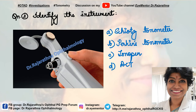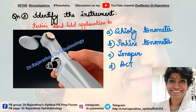Second question: identify the instrument. The moment you see this, most of us know that it is the Perkins handheld applanation tonometer. Schiotz tonometer most of you must have seen in your OPDs. Tono-pen is just like a small pen. DCT dynamic contour tonometer is an attachment to the slit lamp and gives you a digital reading. This is the Perkins handheld tonometer — the tonometer of choice for congenital glaucoma.